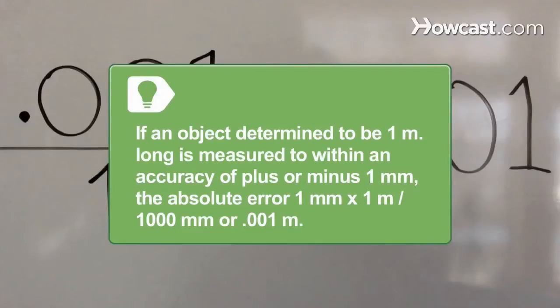For example, if an object determined to be 1 meter long is measured to within an accuracy of plus or minus 1 millimeter, the absolute error is 1 millimeter times 1 meter divided by 1 thousand millimeters, or 0.001 meter.